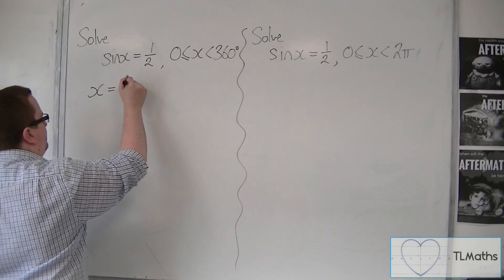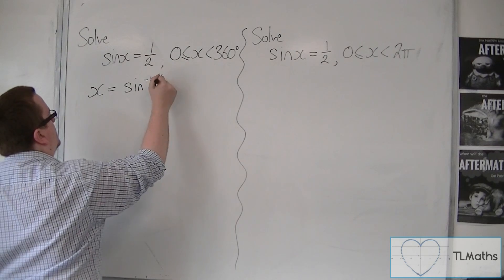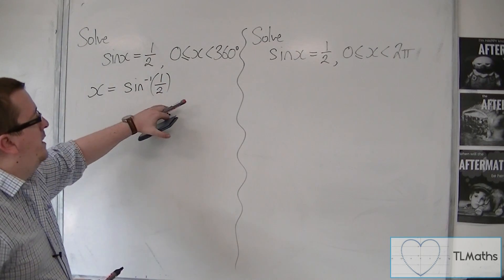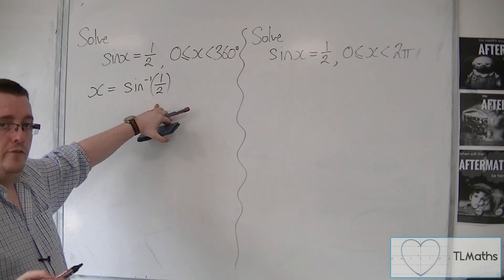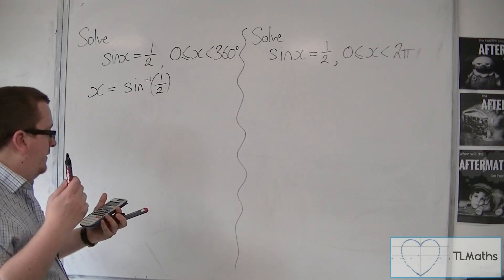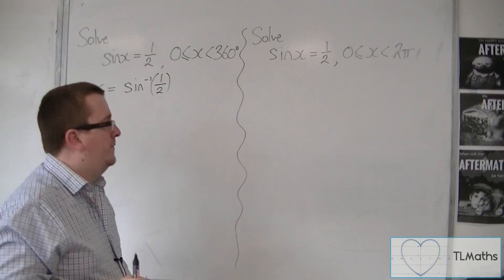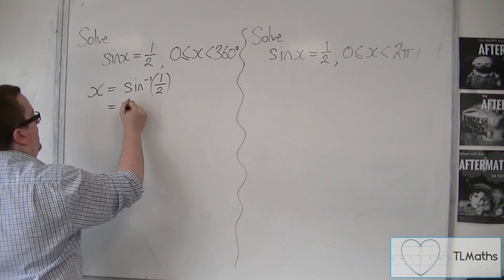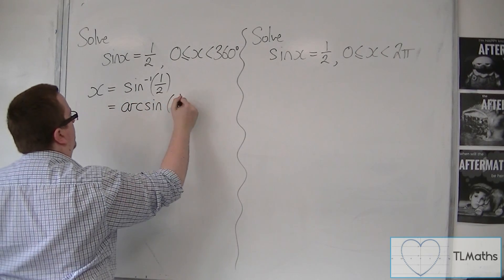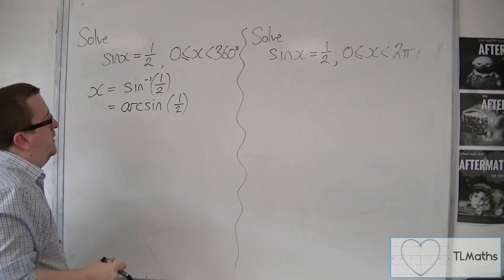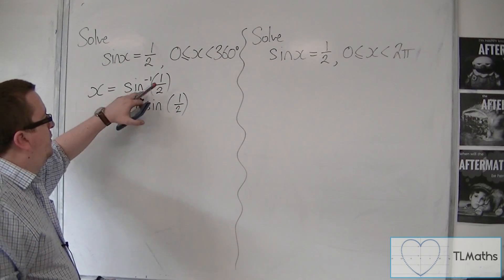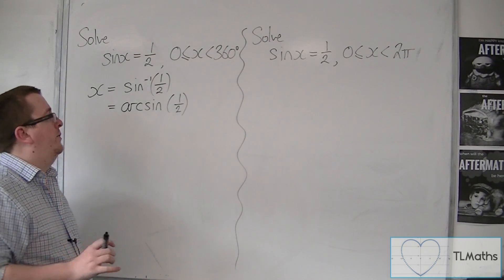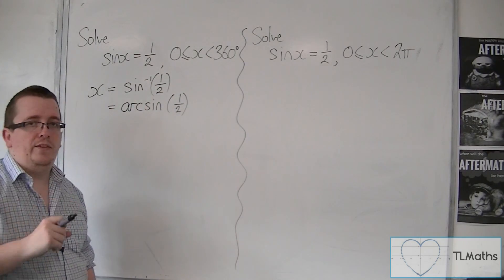You can write this in one of two ways. You can either write this as inverse sine of a half — sine to the minus one of a half. But there is also another way of writing it, and that is arc sine of a half. Both of these versions are commonly used, so you need to be aware of both of them. They mean exactly the same thing.